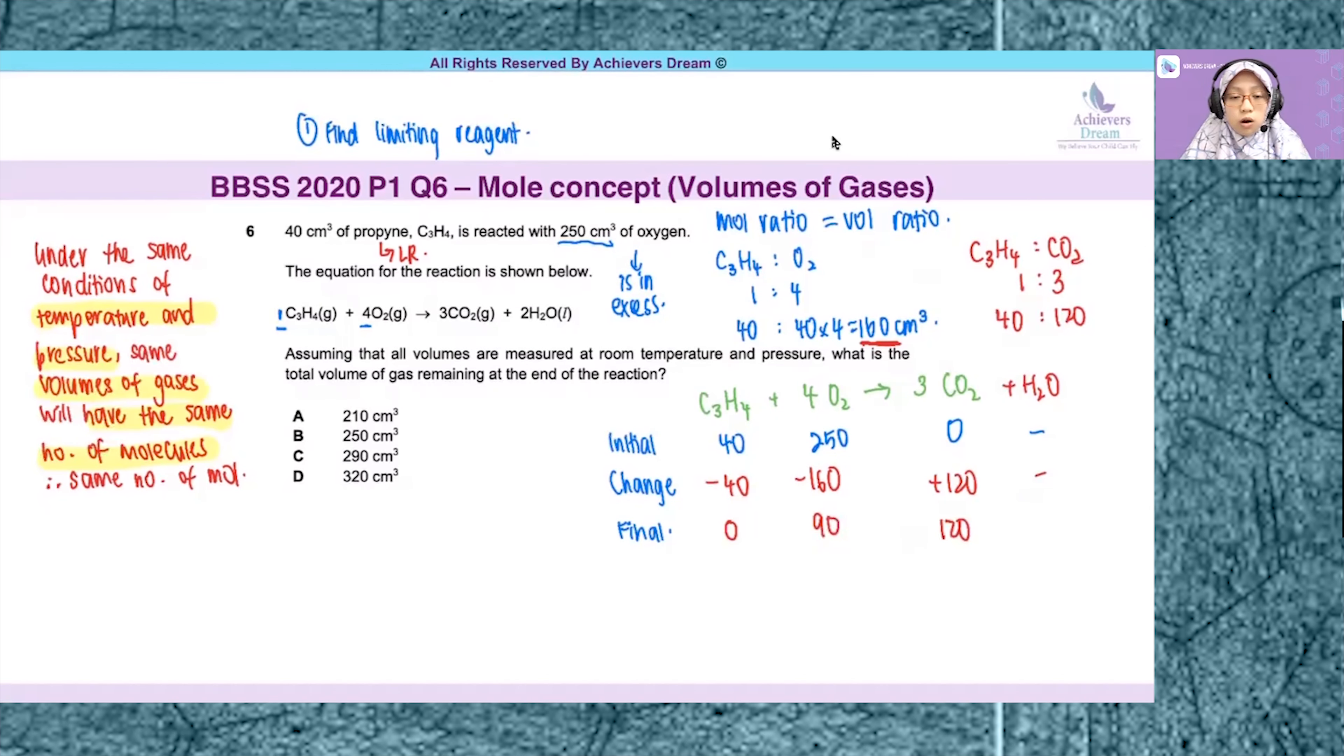Now assuming that all volumes are measured at room temperature and pressure, what is the total volume of gas remaining at the end of the reaction? The total volume of gas at the end of the reaction is the summation of my excess oxygen 90 cm³ and my gaseous product carbon dioxide 120 cm³. So total volume remaining is 90 plus 120 cm³, which is 210 cm³. Hence, your answer is A.